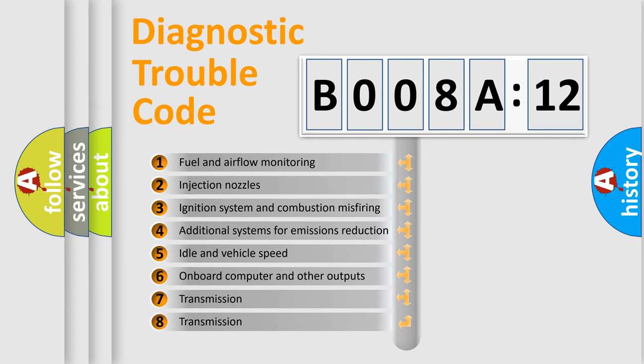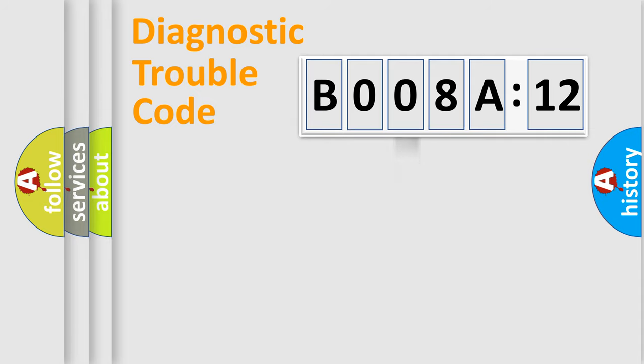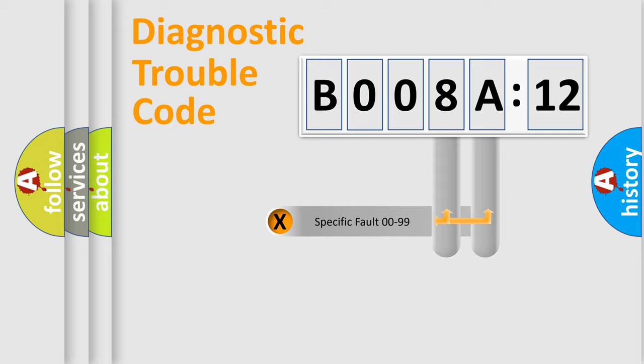The third character specifies a subset of errors. The distribution shown is valid only for the standardized DTC code. Only the last two characters define the specific fault of the group.